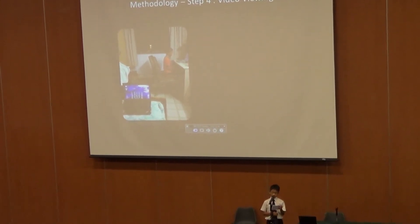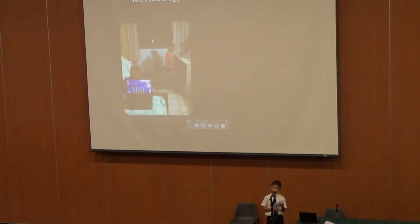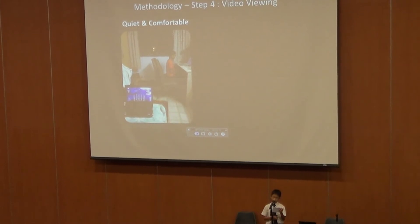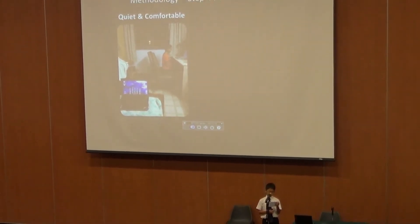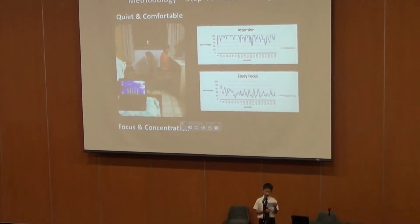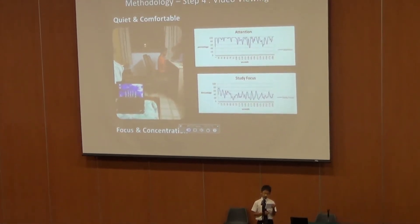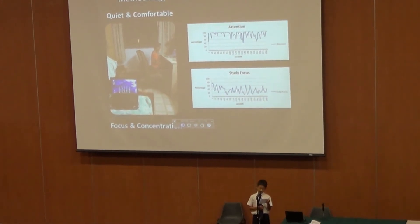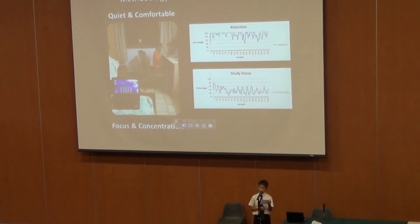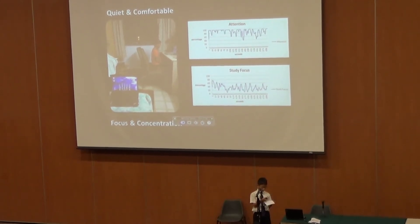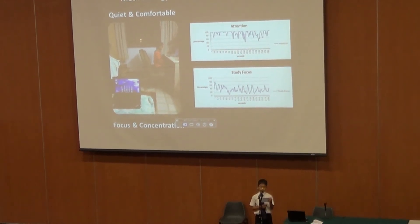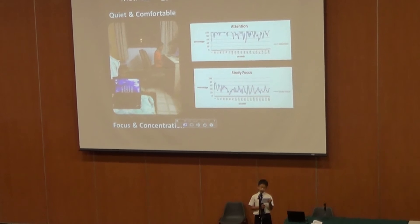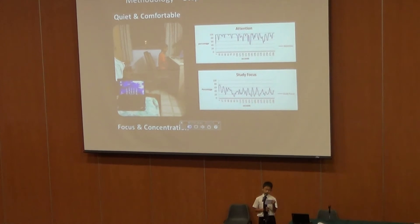For step four, the subjects were asked to view and analyze their own flipped video. This step represents the visual mental imagery process. The room was quiet and comfortable for better concentration. The subjects' brainwaves were then recorded by an application called Muse Brainwaves using the BCI. The graph on the right shows the brainwave signals that I captured — attention and study focus levels. These signals were used to find the relationship between attention and study focus with the kicking distance. Attention is defined as using mental effort to attend to some things while ignoring others, and study focus is a combination of attention and analysis done by the subject. Muse Brainwaves declined to further define their constructs, claiming this information was confidential.